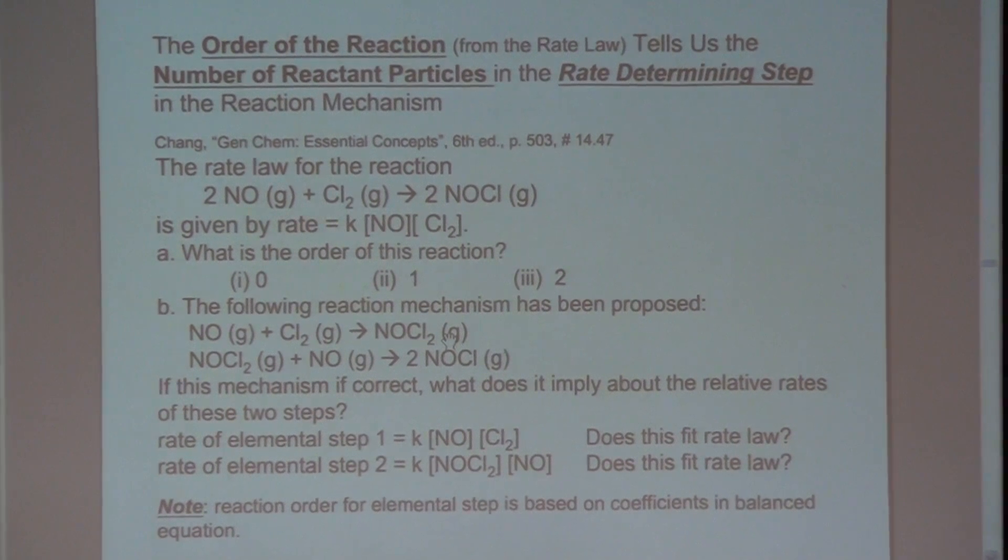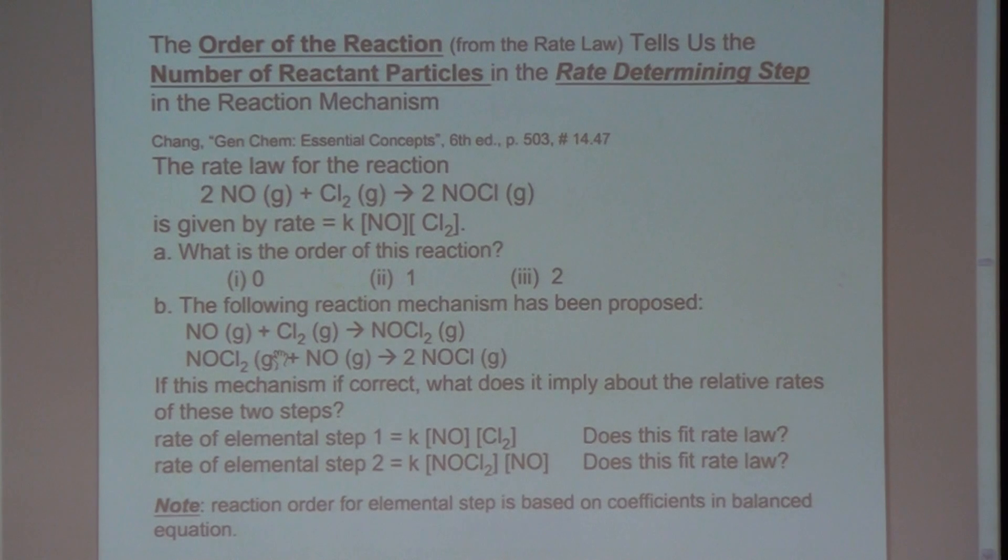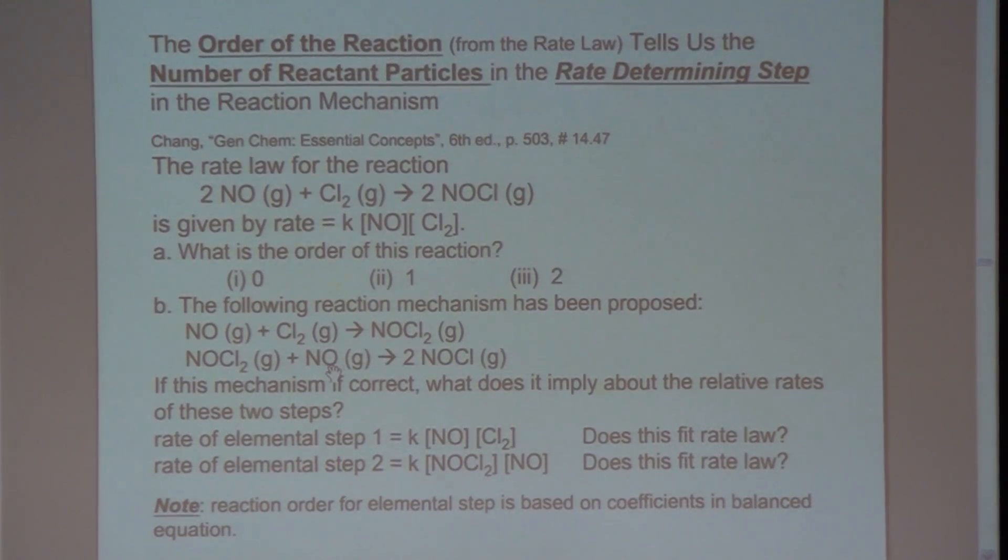So the following reaction mechanism as proposed is a two-step mechanism. So in the first step, you have NO plus Cl2 producing NOCl2. And then in the second step of the mechanism, NOCl2 plus NO produces 2NOCl. Now, we said that if we add up these two steps, we should get the overall reaction. So if we get the overall reaction, do we add this reaction to this one? So again, if we add up this reaction and the second reaction, do we get this reaction up here? Yeah, we do. So so far so good with our reaction mechanism.